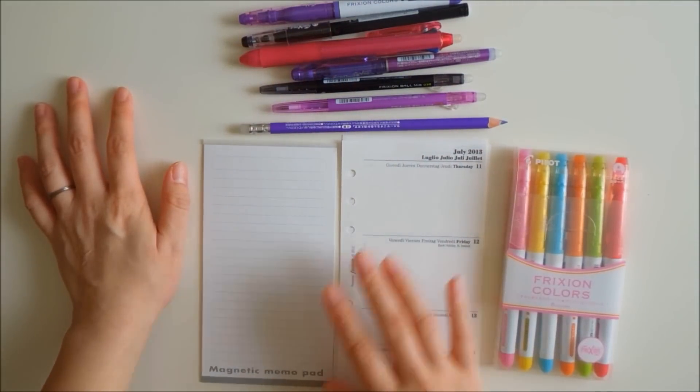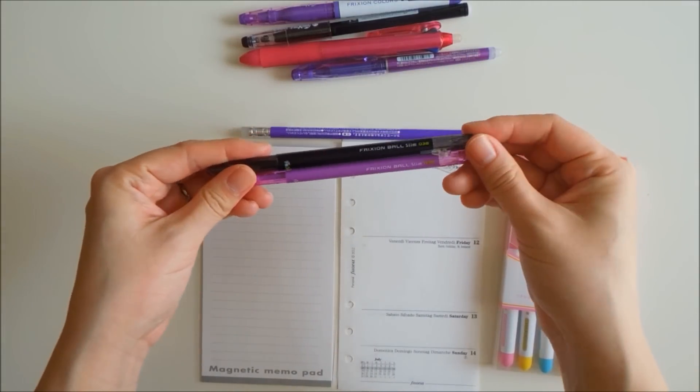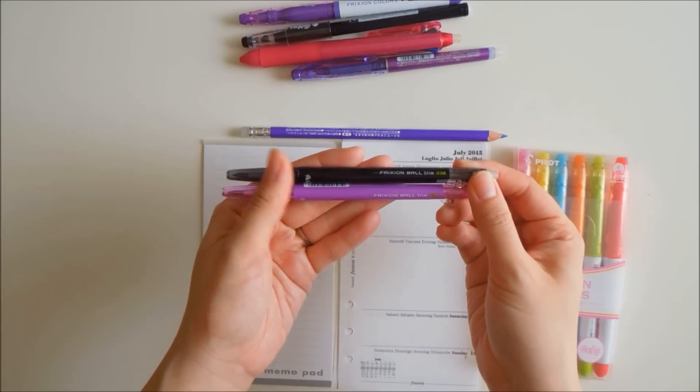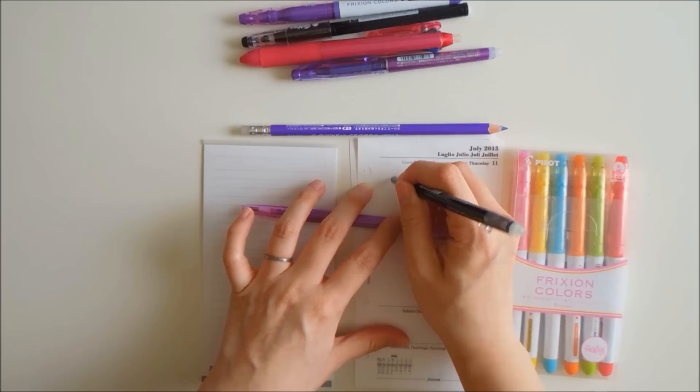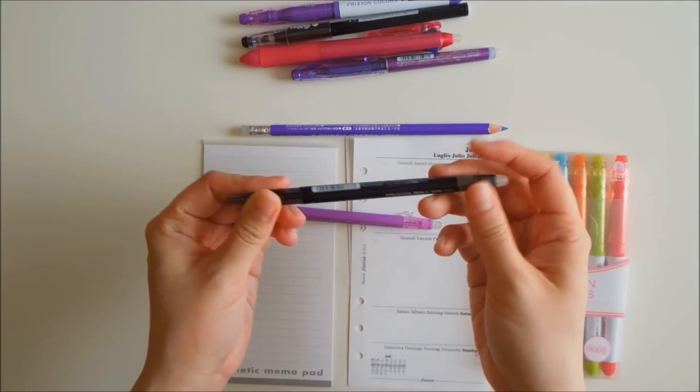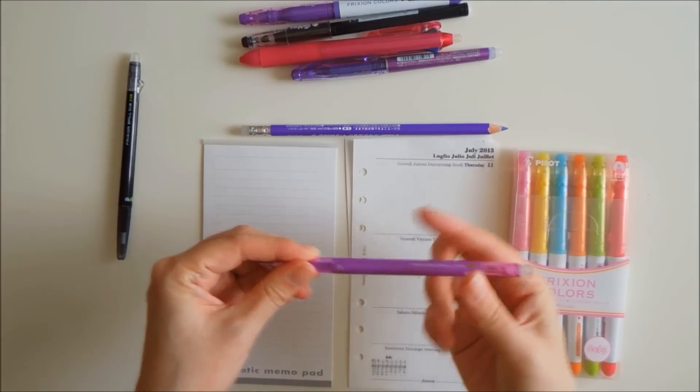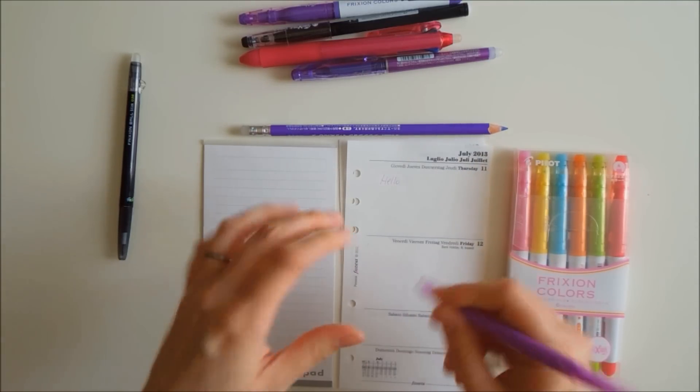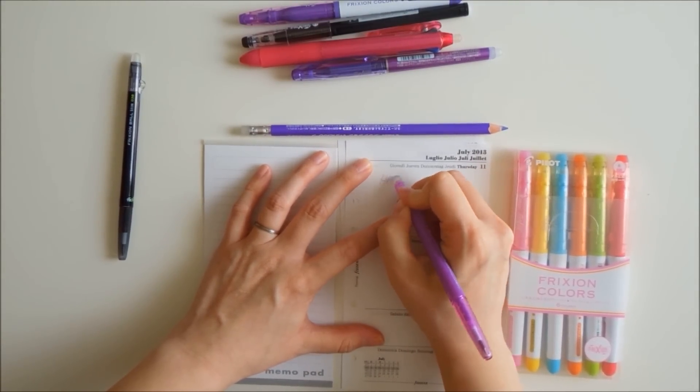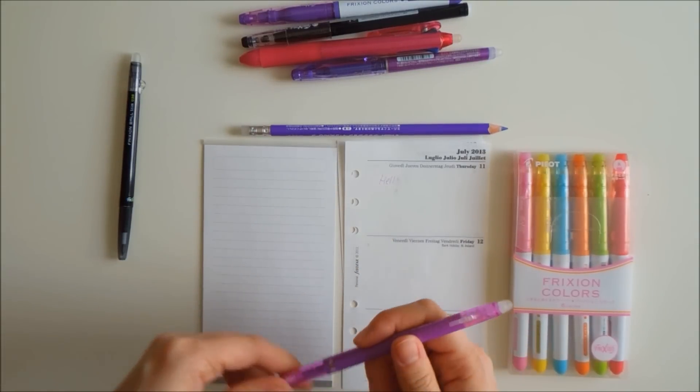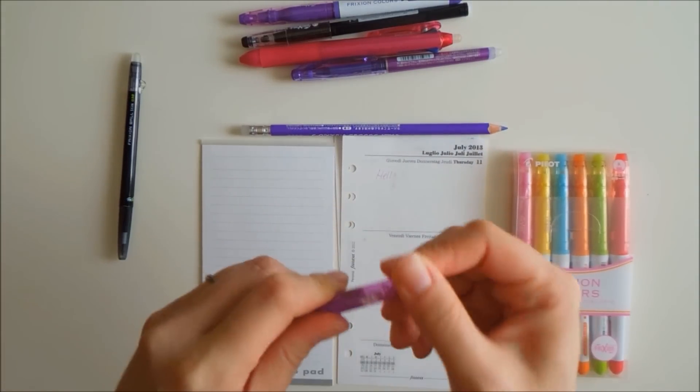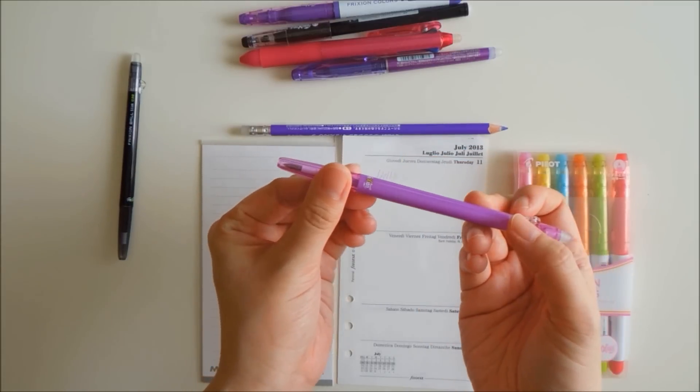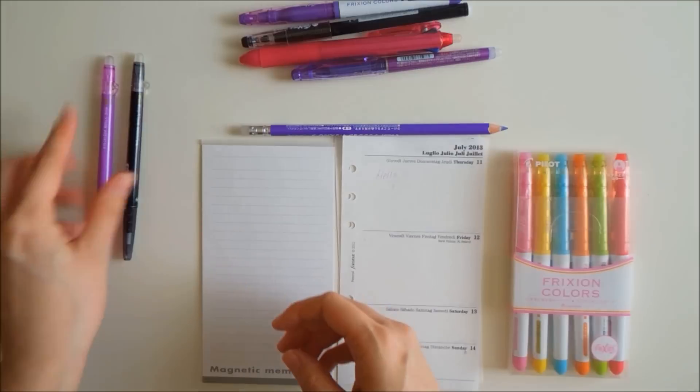These are the Frixion Ball Slim 0.38. I really like these ones. I like fine tip pens and pencils in general. The downside to this is that this one has already dried out on me. If I fiddle around with it, it should be coming back, but I really do enjoy the fact that it's nice and thin. Maybe I'll just show you a demo. I'll just erase the O. This is the clicker type, so you don't have to worry about having a cap or anything like that.